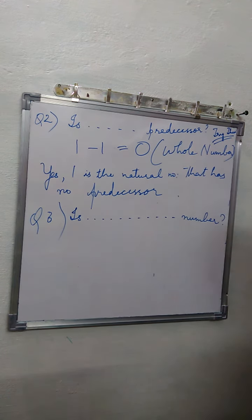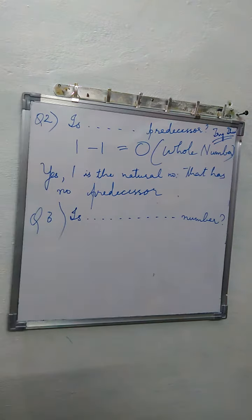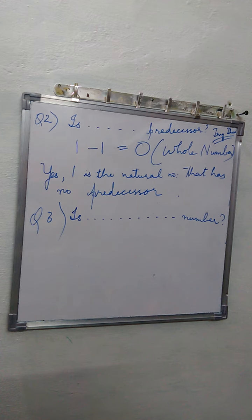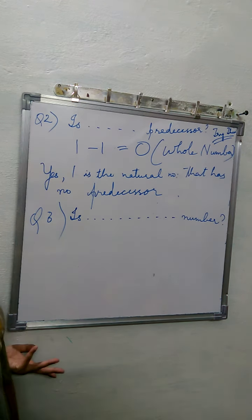Now we will start question number 3. Question number 3 says: is there any natural number which has no successor? Is there a last natural number? Every natural number has a successor.